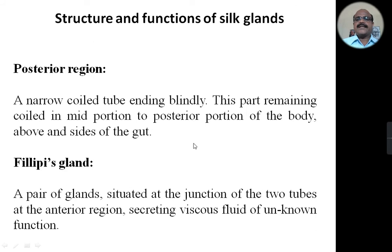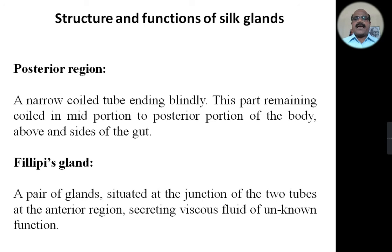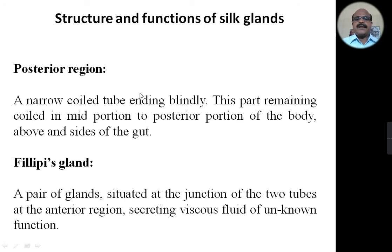The posterior region has a narrow coiled tube ending blindly. This part remains coiled in the middle portion to posterior portion of the body, above and on the sides of the gut. This posterior region is a very blind coiled tube which secretes fibroin. Along with these three regions of the silk glands,